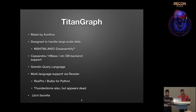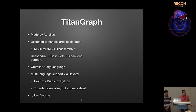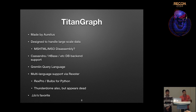Gremlin allows you to select nodes based on properties, filter them further, and find other nodes and edges based on other properties. It has multiple language support. Rexster is a REST API that sits on top of Titan, and there are Python modules called RexPro and Bulbs. There was also one called ThunderDome — coolest name — but it hasn't been updated in a while so it's probably dead. One limitation: if you create a graph and want to index a property, unlike a relational database that back-indexes everything, Titan only future-indexes. So you really have to think about what properties you want before you start creating your graph.